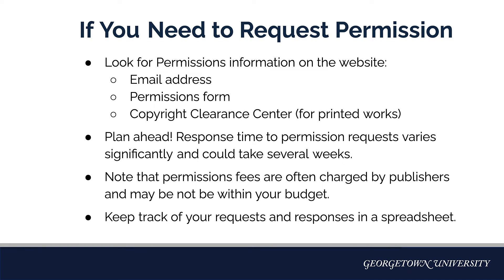If you need to request permission to use content, first look to see if there is permissions contact information on the website. This may be an email address, a permissions form, or a link to the Copyright Clearance Center, which is often used for permission to reproduce excerpts from books or journals. Be sure to plan ahead — response time to permission requests varies significantly and could take several weeks or longer. Note that permissions fees are often charged by publishers and may not be within your budget. Keep track of your permission requests and responses in a spreadsheet.